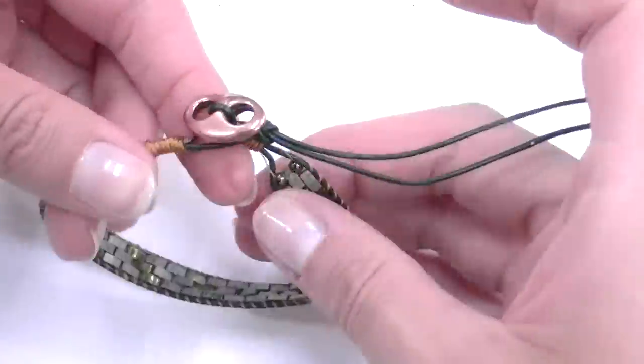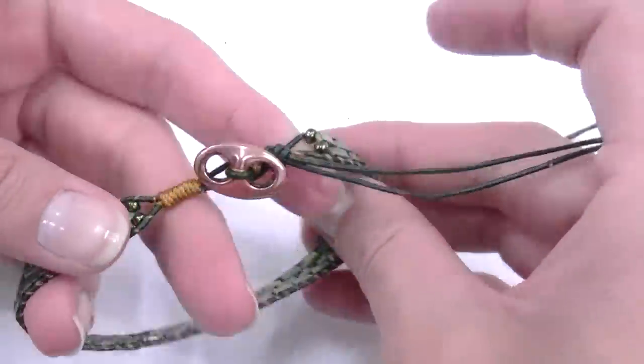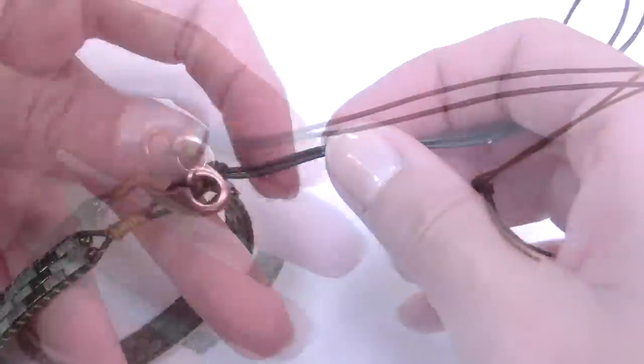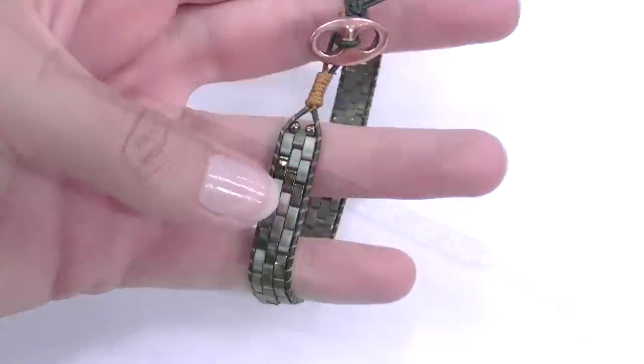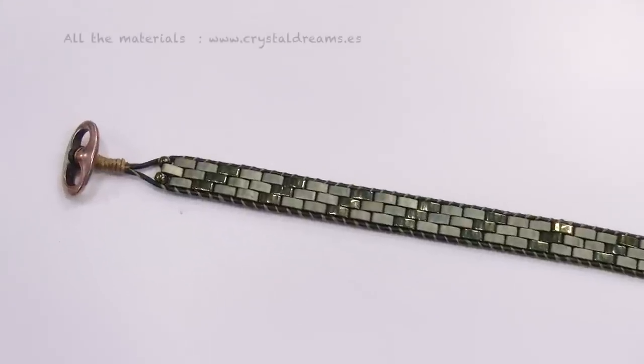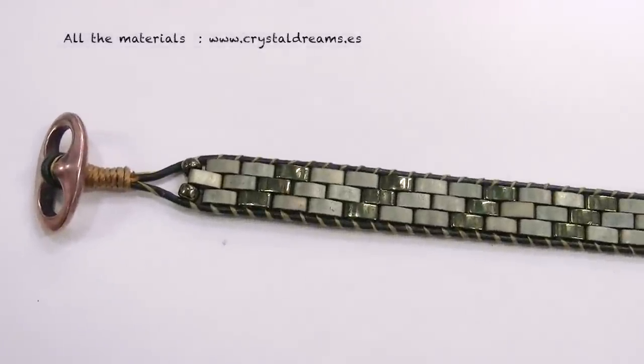And here you are, my bracelet. As you know there is a huge assortment of colors on Miyuki half-tila, so you can customize it as you want and get a gorgeous bracelet that matches with your dress, t-shirt or shoes.